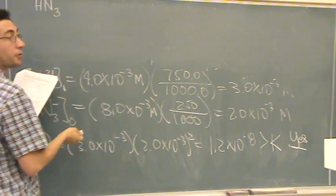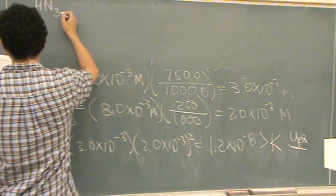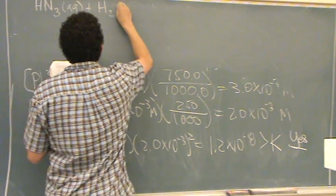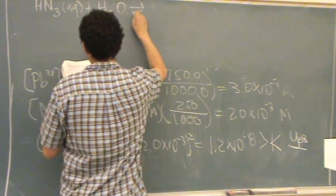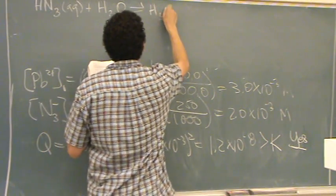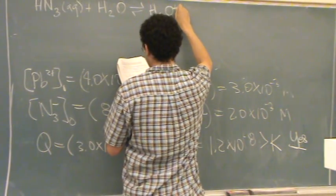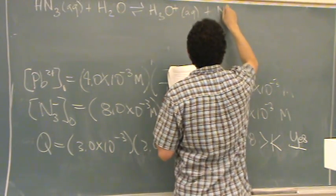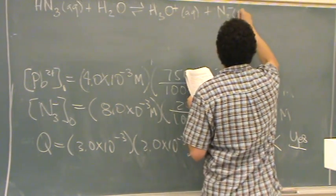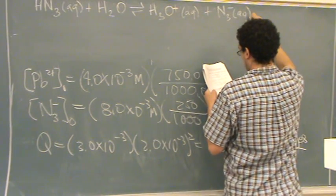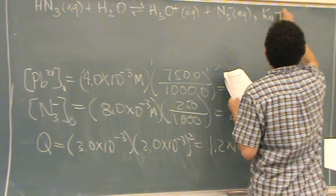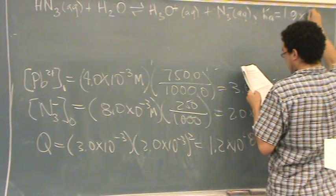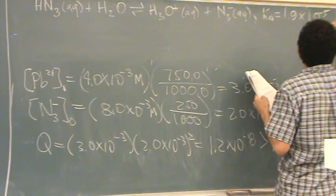Here's the acidic form of the azide. This is a Ka because it's an acid, has a hydrogen. It's 1.9 times 10 to the minus 5. So that's given.